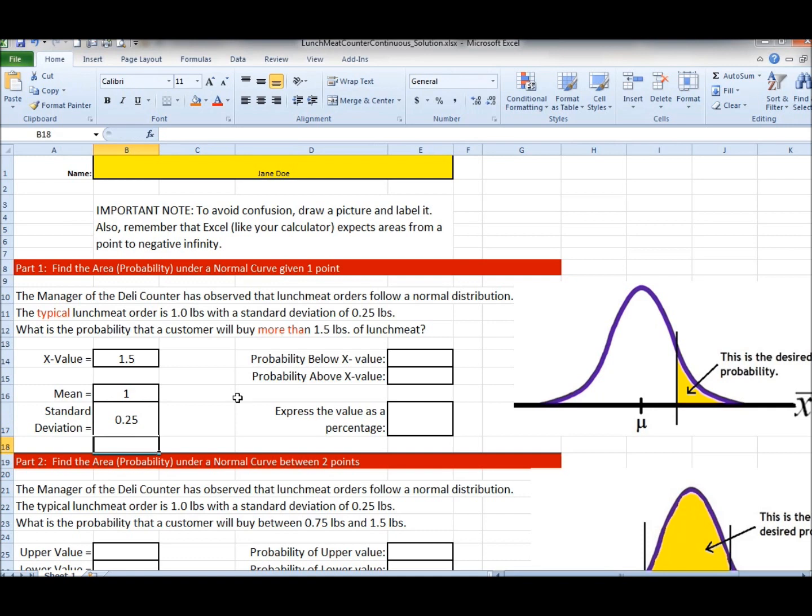Now remember that by default your calculator, Excel, some charts, not all charts will give you the area from a point to negative infinity. For my students that if you're using the chart in your book it's not from this point to negative infinity, it would be from this point to the mean so be very careful about this. As an in-between step I want you to calculate from this point to negative infinity.